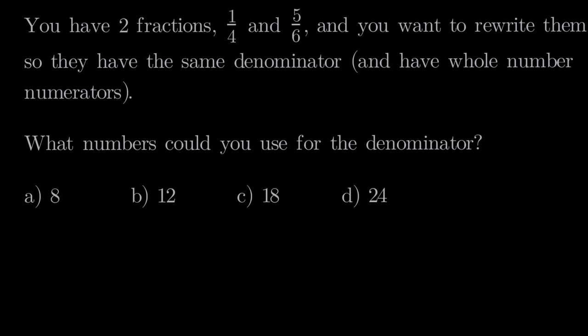For example, for 4, some multiples of 4 would be: 4 times 1 is 4, 4 times 2 is 8, 4 times 3 is 12, and so on. Let's pause and look at why we have to pick a multiple of 4 and 6 — why we can't just pick any number, but have to pick a multiple of our denominators.